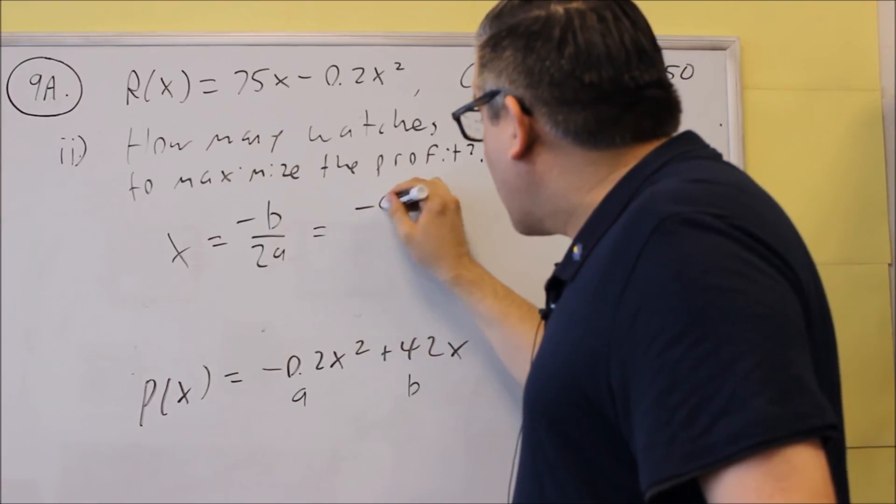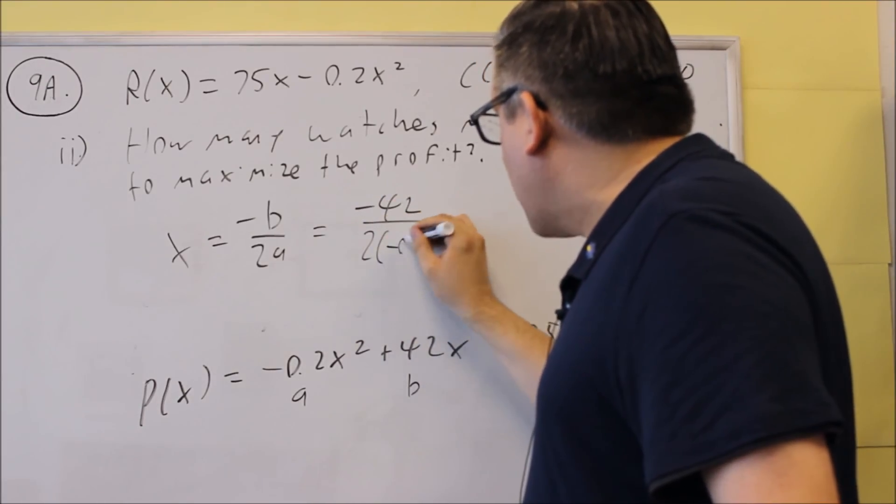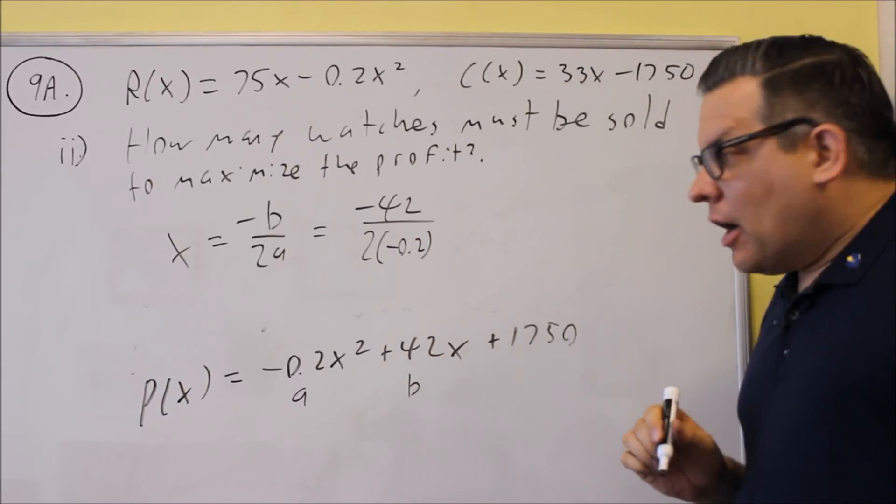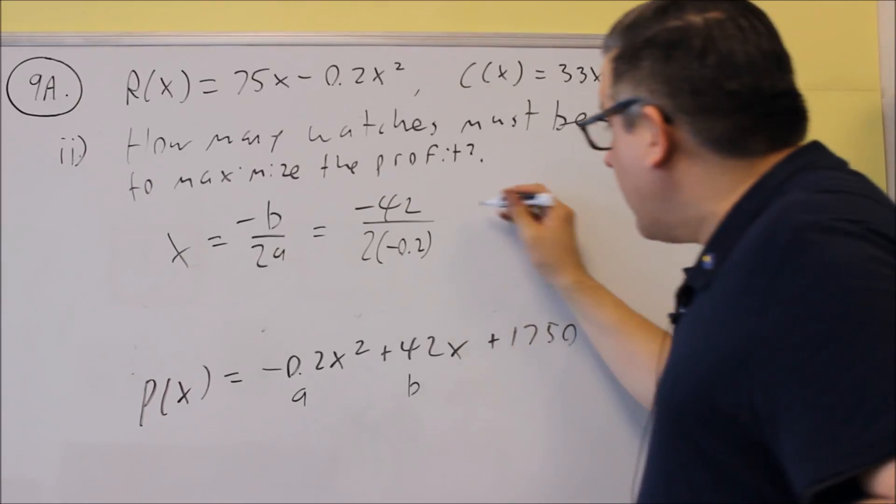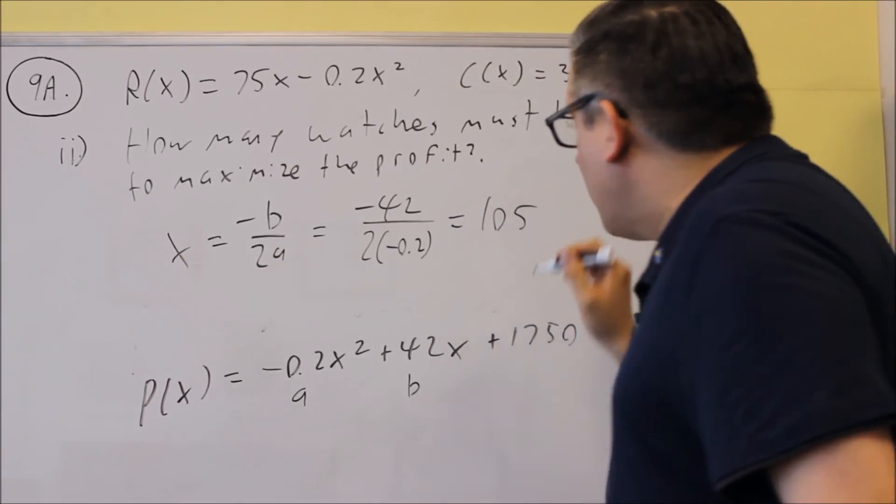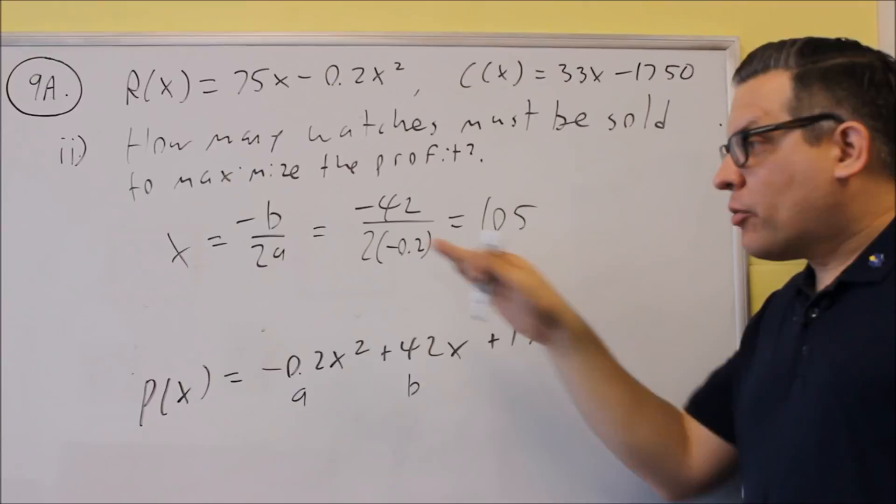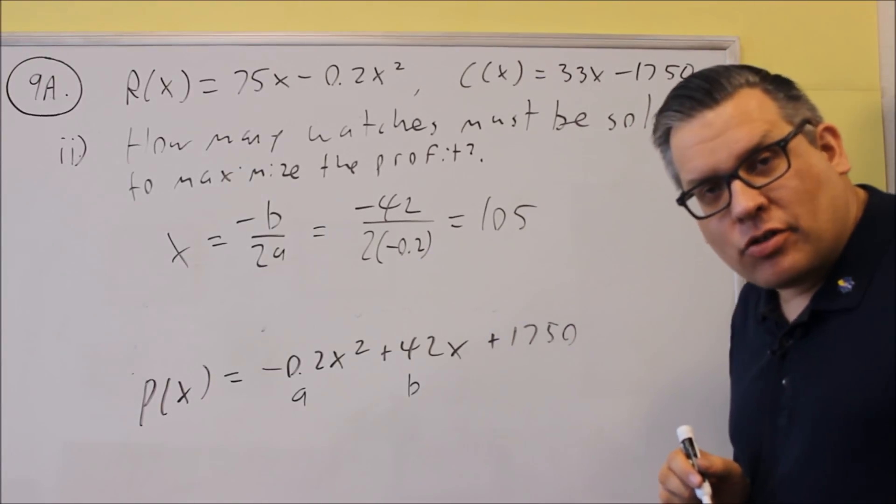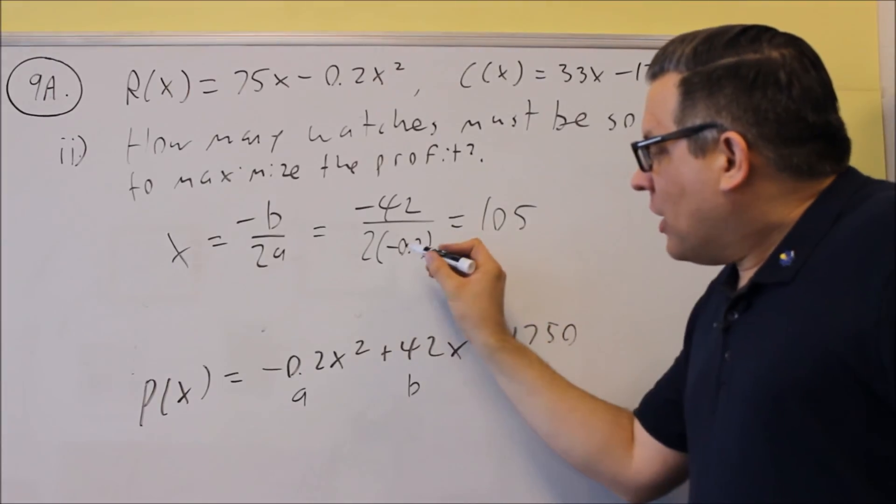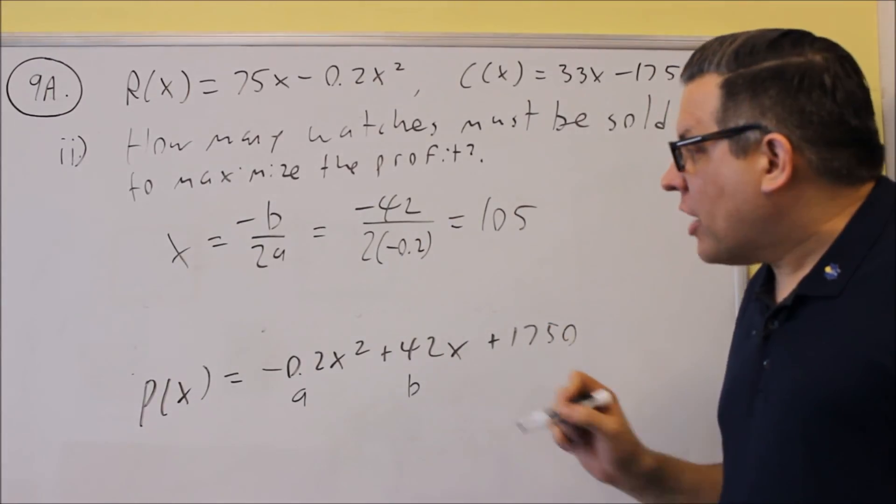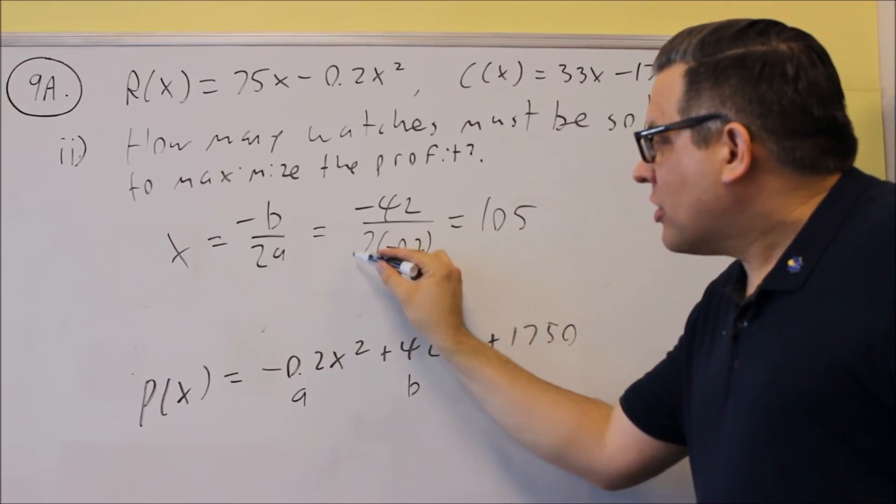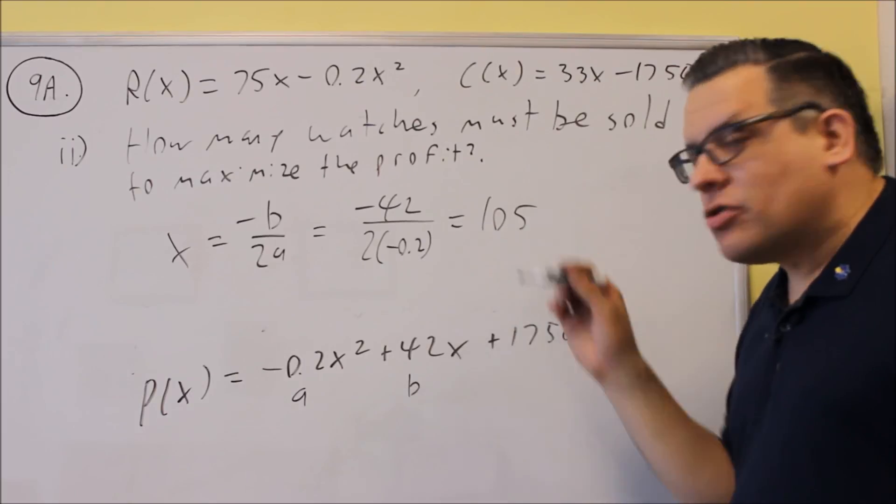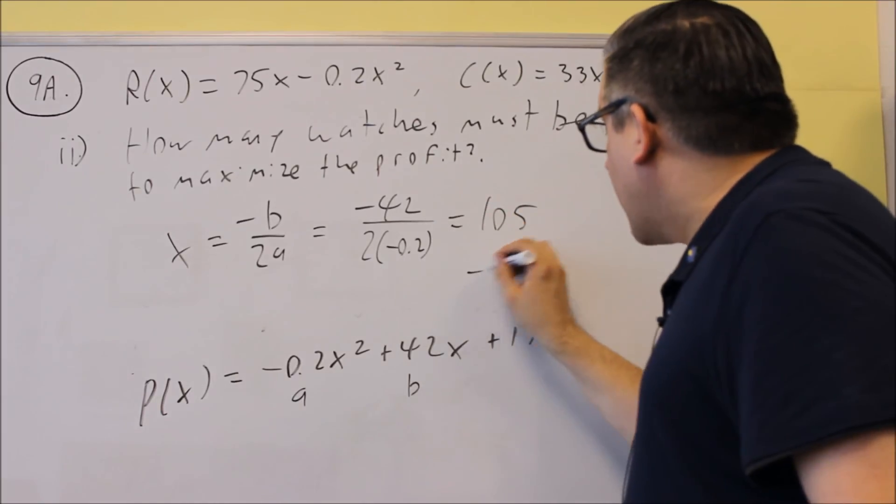So I get negative b: negative 42 over 2 times negative 0.2. Now, if you put this into a calculator and work that out, you get 105. If you did not get 105 and you're wondering why, here's the reason: if you're going to put all this in your calculator at once, make sure that you put parentheses around the whole entire bottom, like I did here.